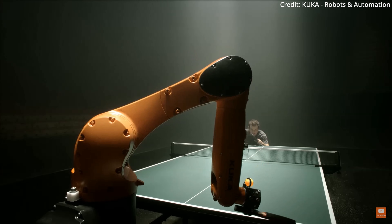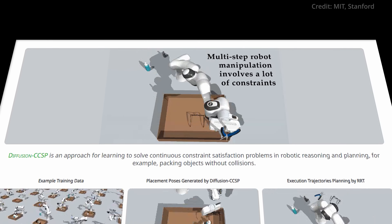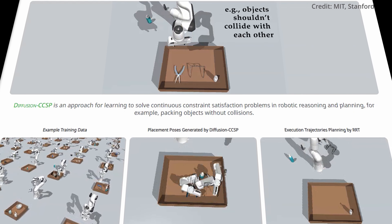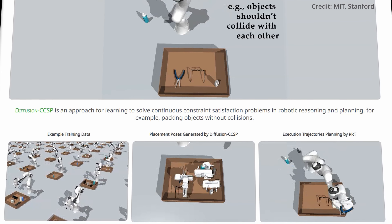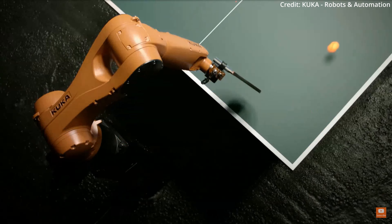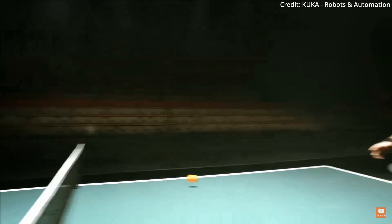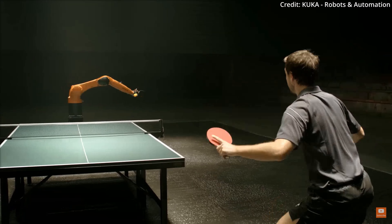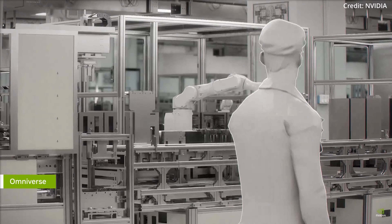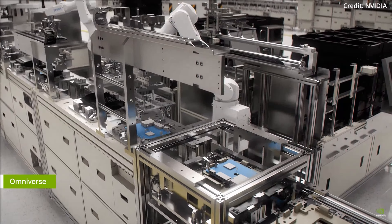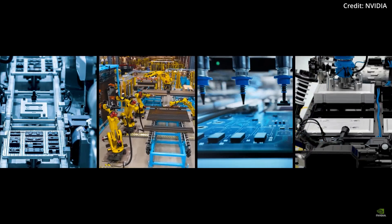Simply put, Diffusion CCSP offers a generalized framework for training robots. It combines a suite of pre-trained diffusion models that are skilled at dealing with particular types of constraints. During real-world tasks, these models work in tandem to provide a comprehensive solution that satisfies multiple constraints simultaneously. Imagine a robot that can not only determine the best grip for lifting an object, but also the most effective route to move it, all while avoiding collisions and conserving energy — that's the kind of efficiency Diffusion CCSP aims to achieve.